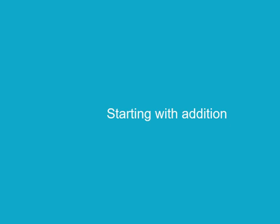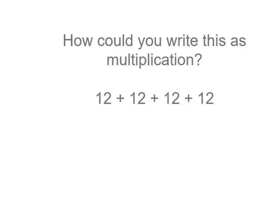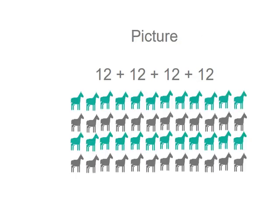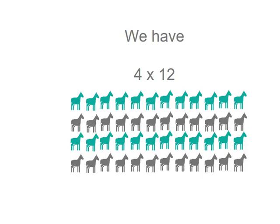What about if we start with addition and this time try and express it as groups of, or multiplication? How could you write this as a multiplication problem? In this picture, I've got twelve horses in a row and I have four rows. So I have twelve plus twelve plus twelve plus twelve. Now if I think of each of my rows as one group of horses, I have four groups of twelve horses.